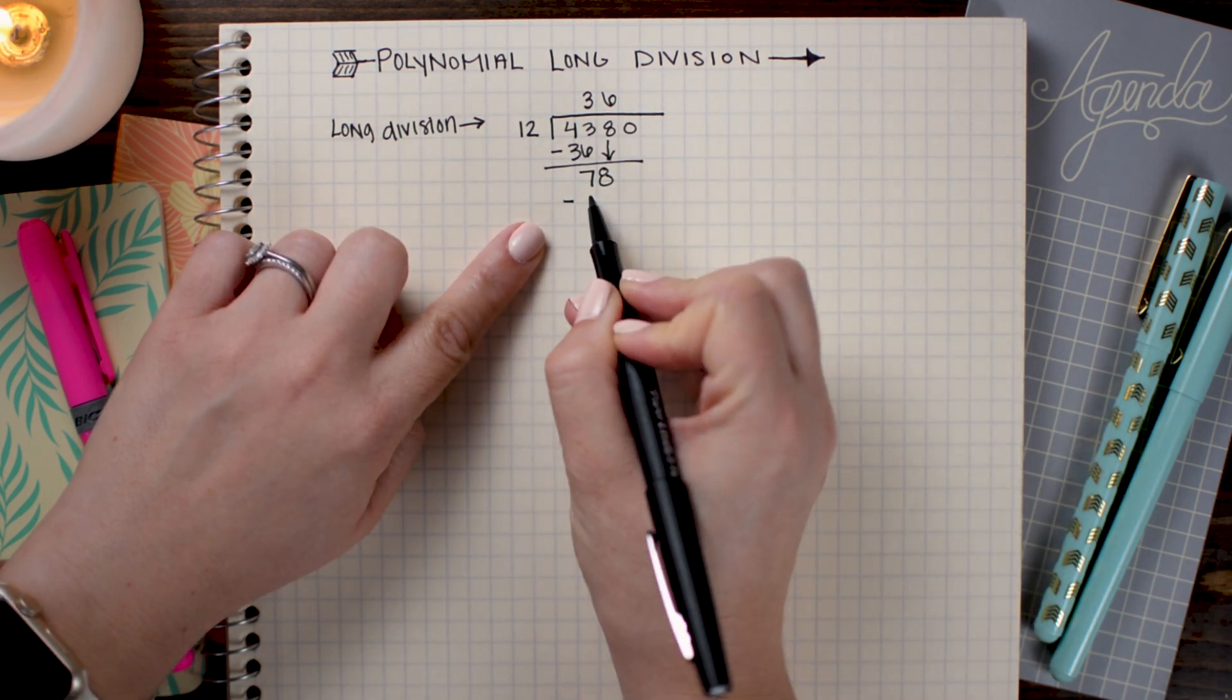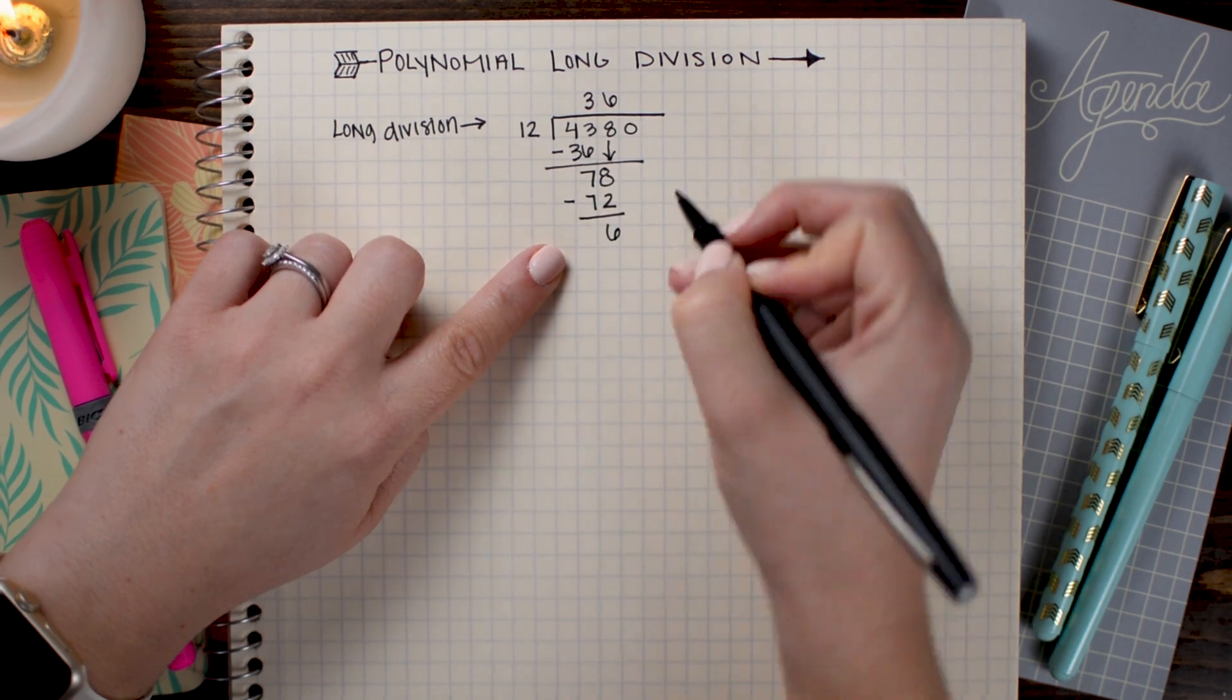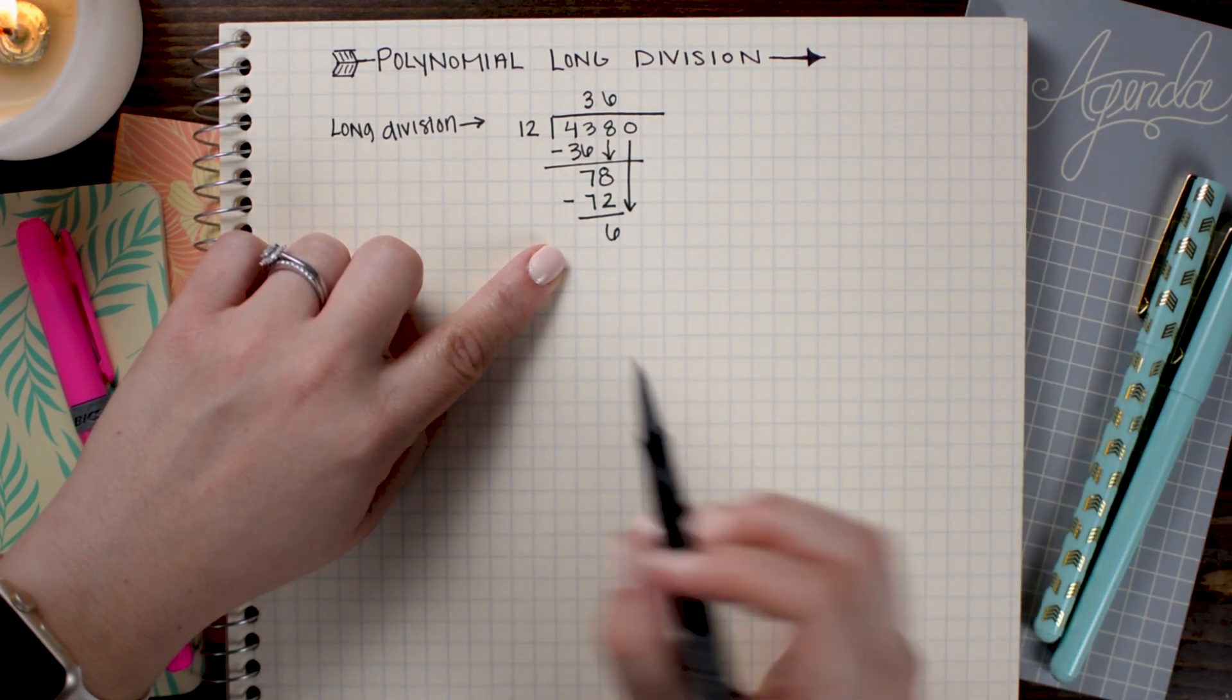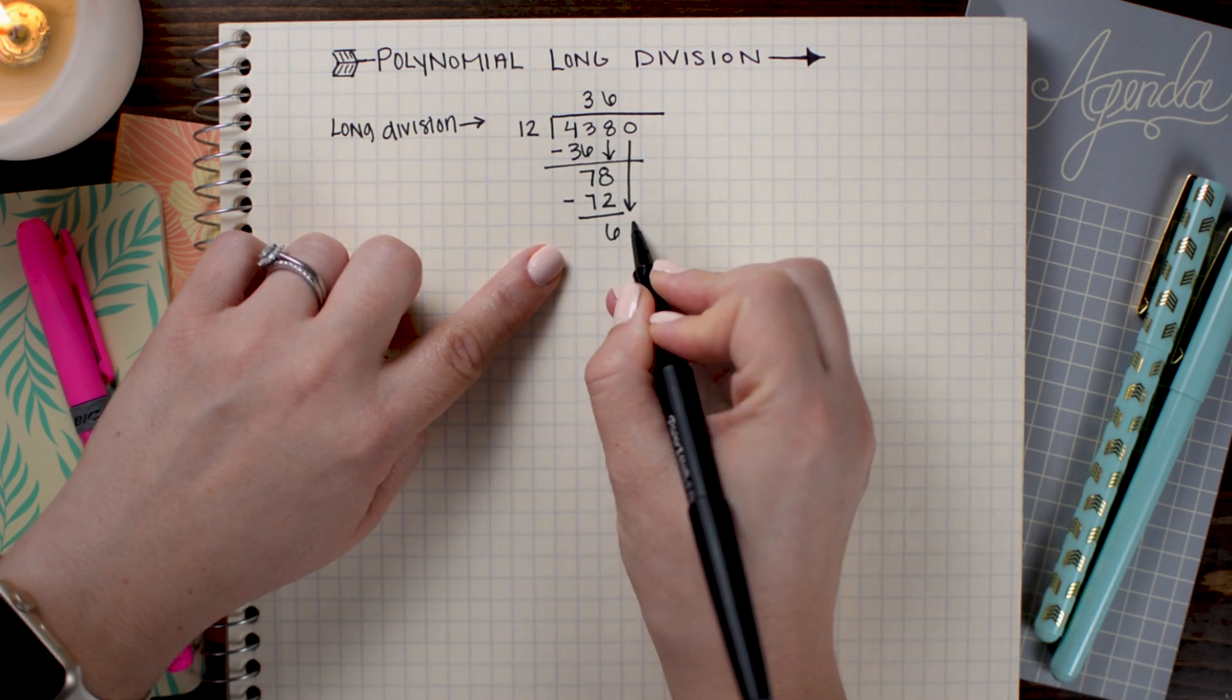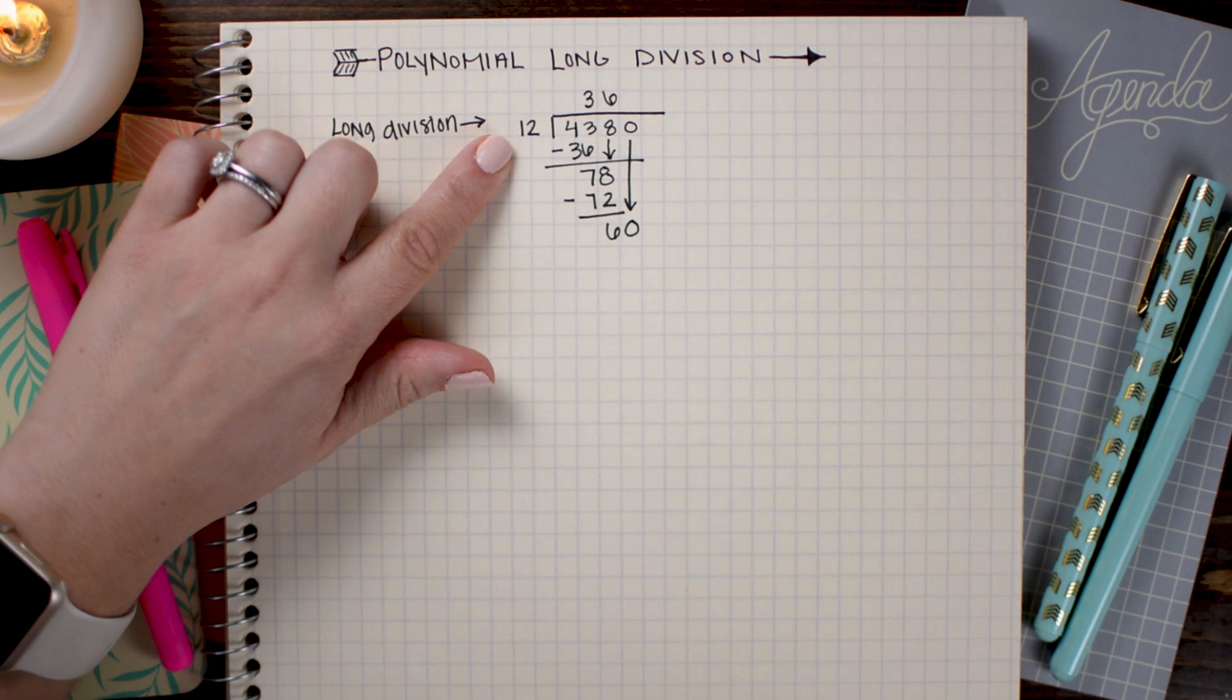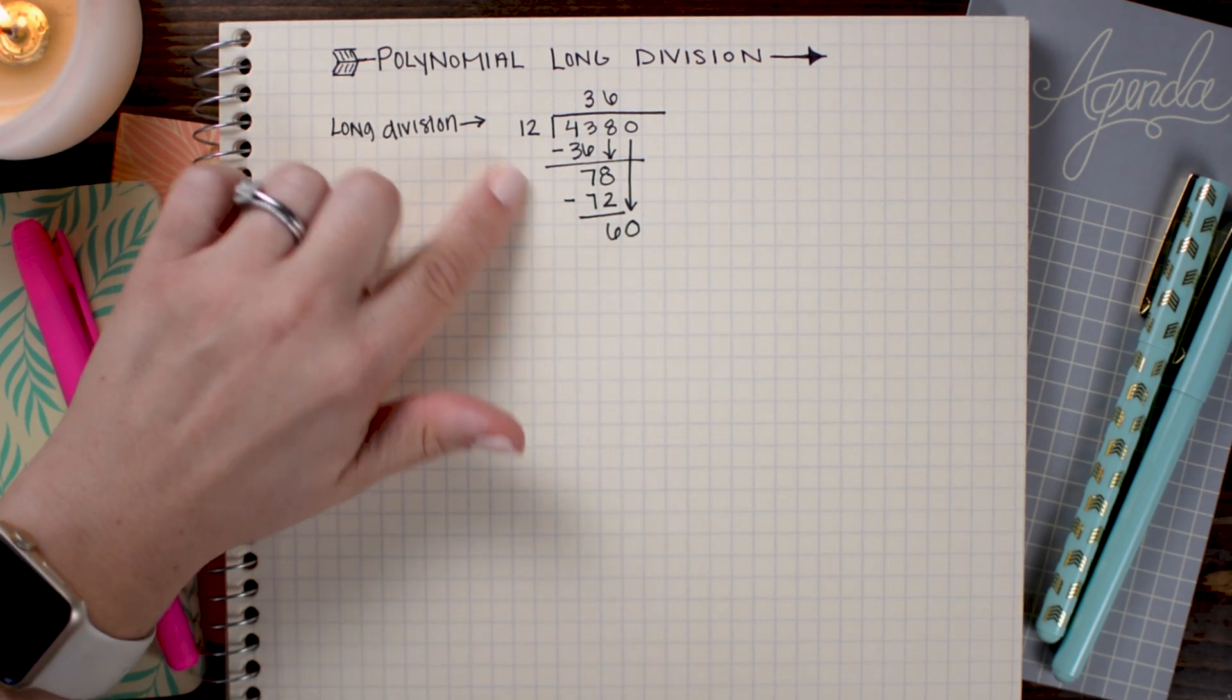So I'm going to do that and then subtract the product of 6 times 12. And lastly, I'm going to bring down the final digit and append it to the 6 to make 60.